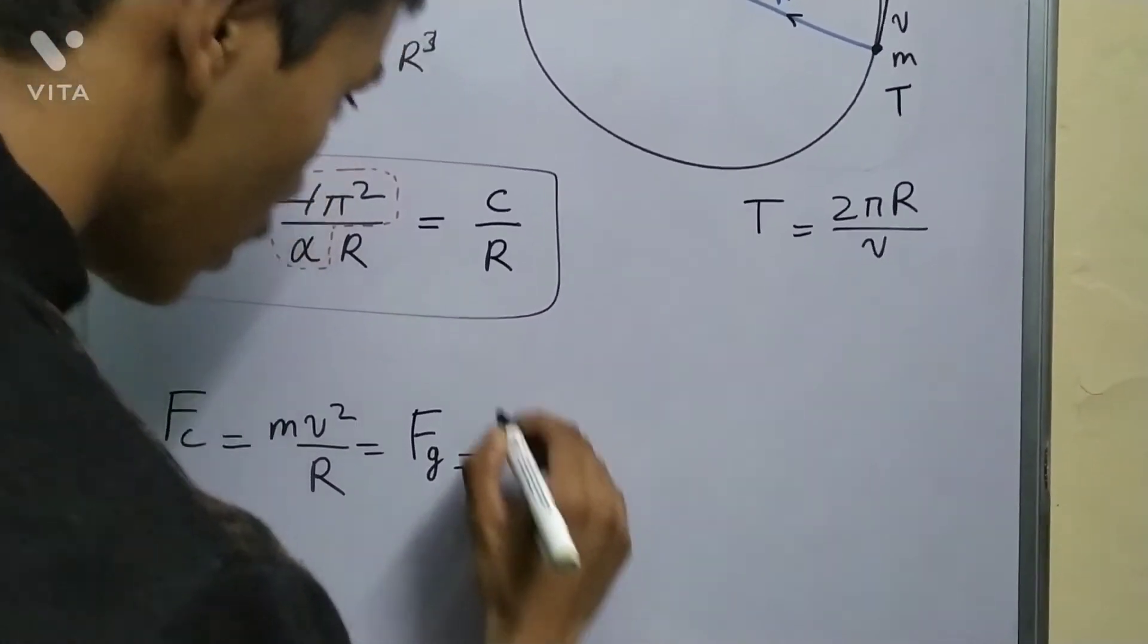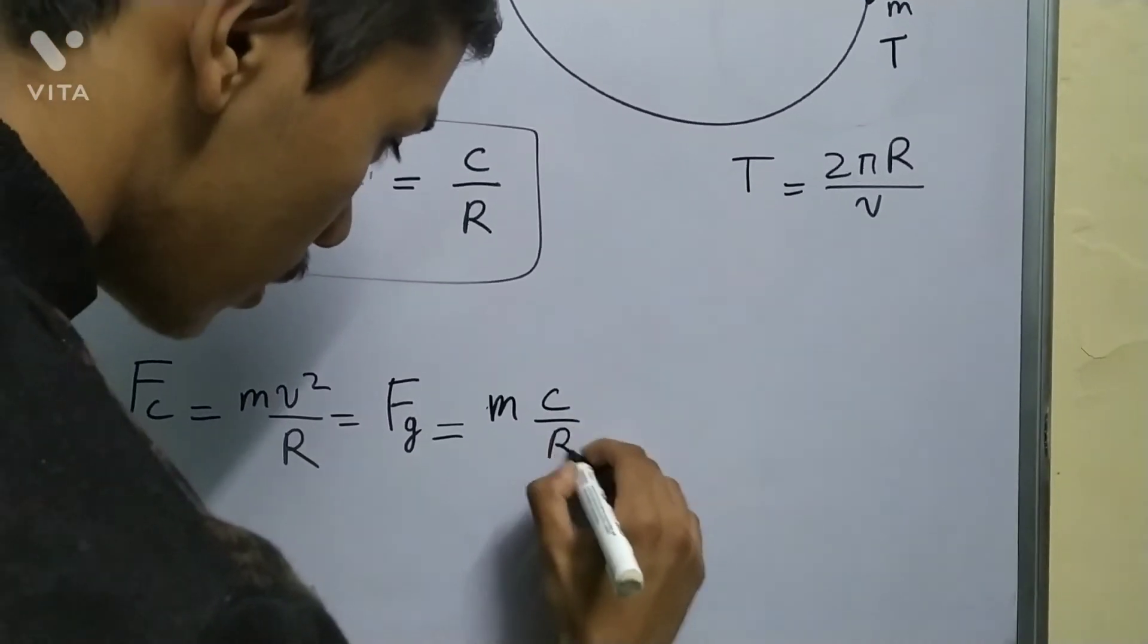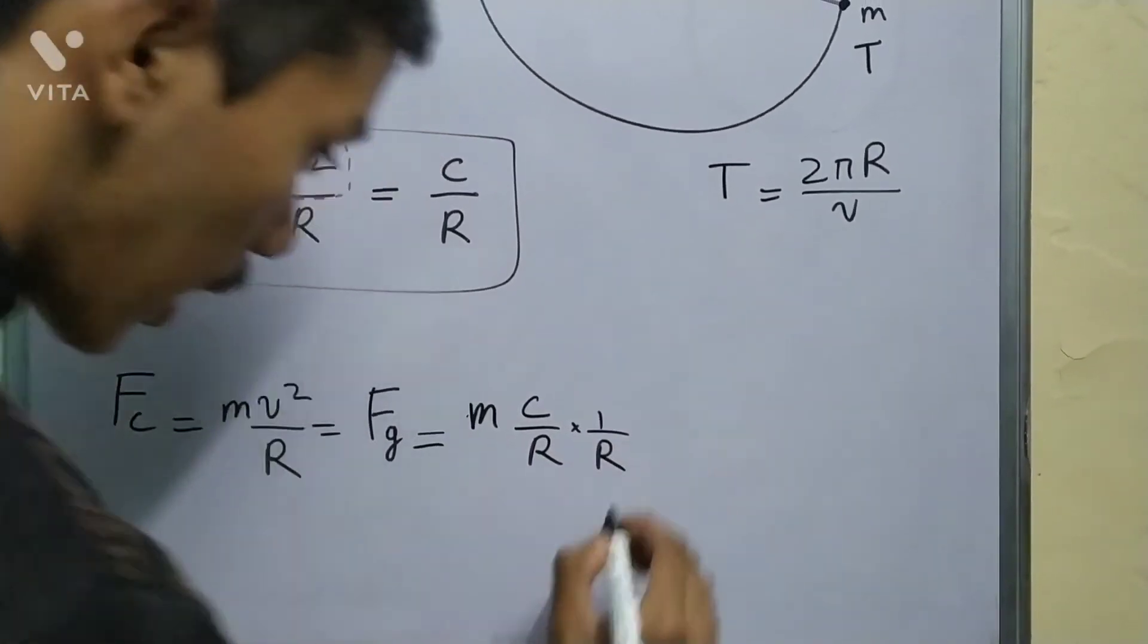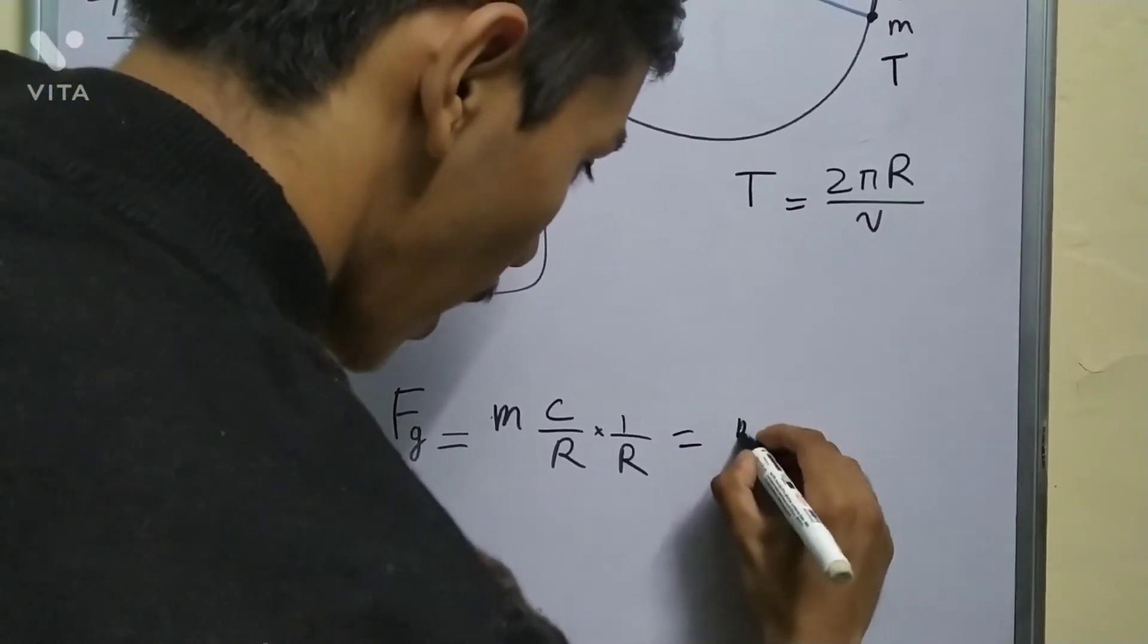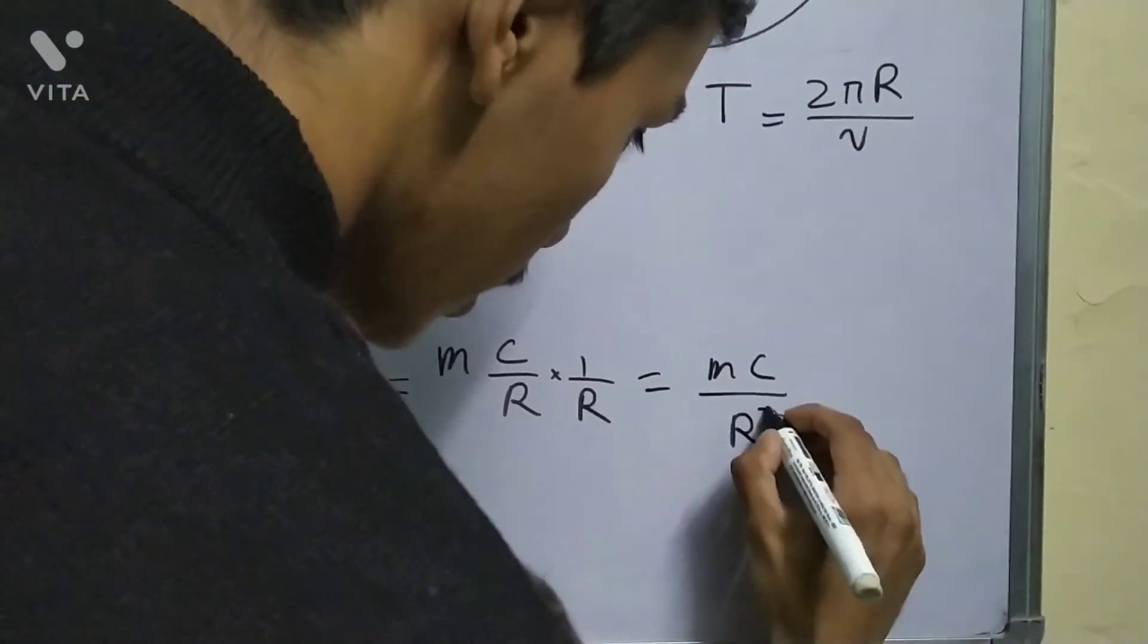So we get m v² is c by r upon r. From this you can say that it's m c upon r².